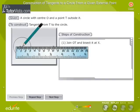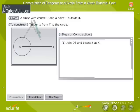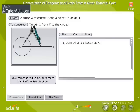Join OT and bisect it at X. Take a compass radius equal to more than half the length of OT.